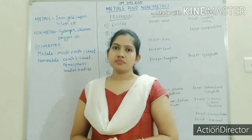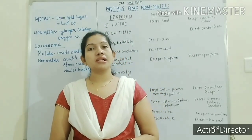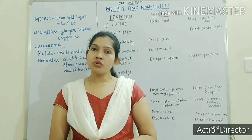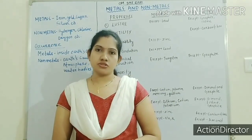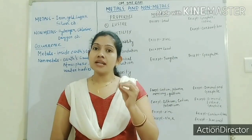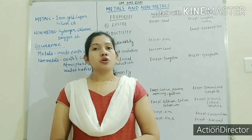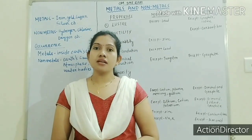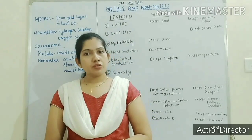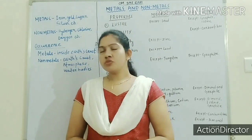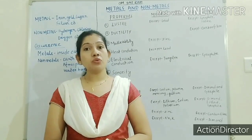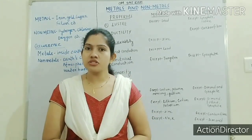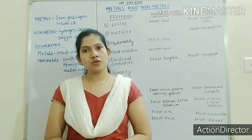Occurrence — where metals and non-metals are found. Generally, metals are found in the earth's crust in mineral form. Why are metals found as minerals inside the earth's crust? Let me tell you about that.